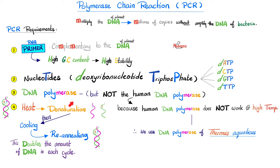We need DNA polymerase, but human DNA polymerase cannot work at the high temperatures used in PCR. Instead, we use the DNA polymerase of Thermus aquaticus, a bacterium that can survive very high temperatures — it even survives inside the hot springs of Yellowstone National Park — at 70 degrees Celsius.